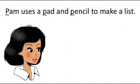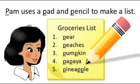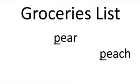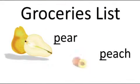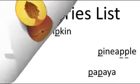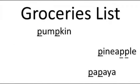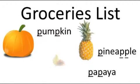Pam uses a pad and pencil to make a list. Oh my, all of her items begin with the letter P that makes the puh sound. Pear, peach, pumpkin, pineapple, papaya.